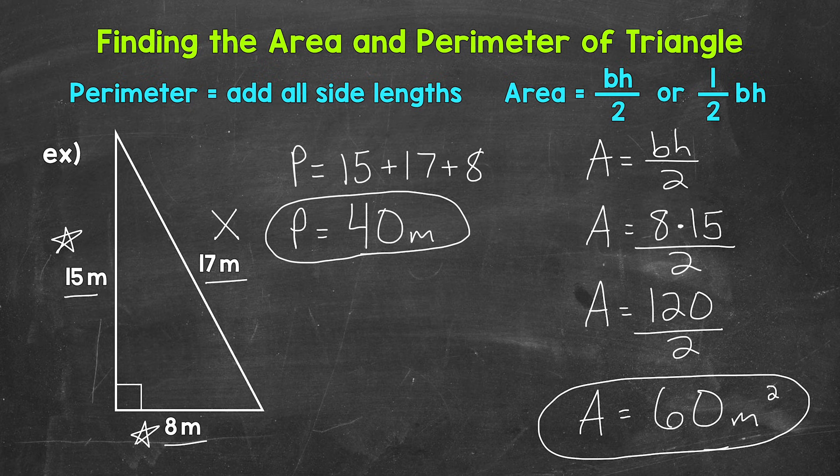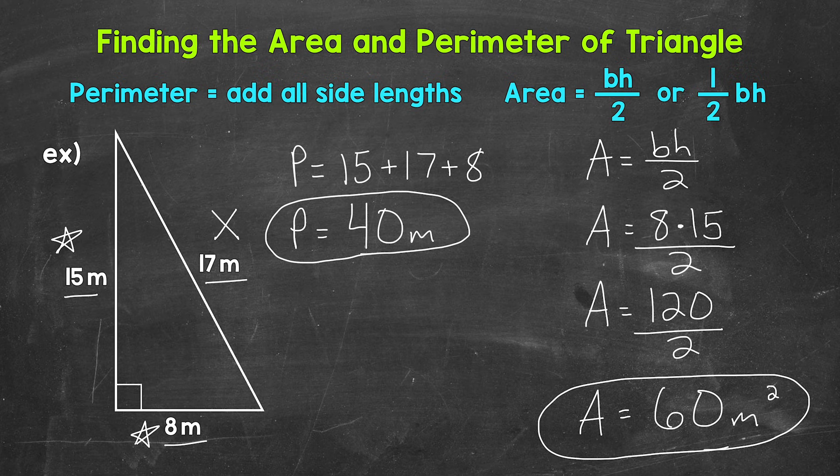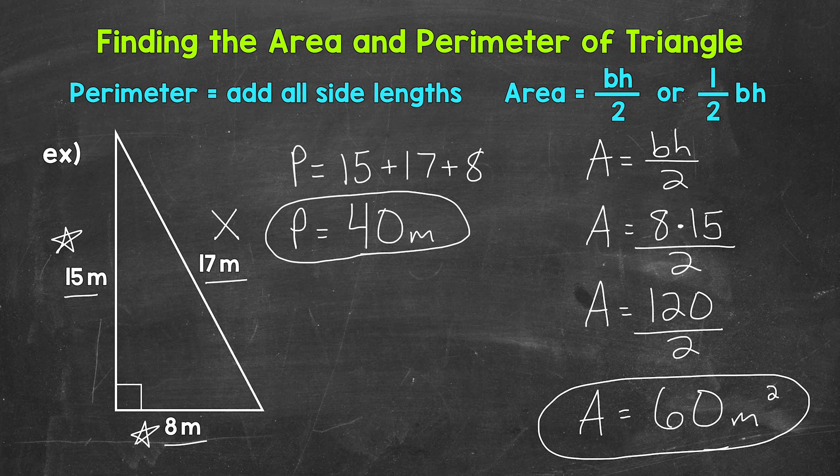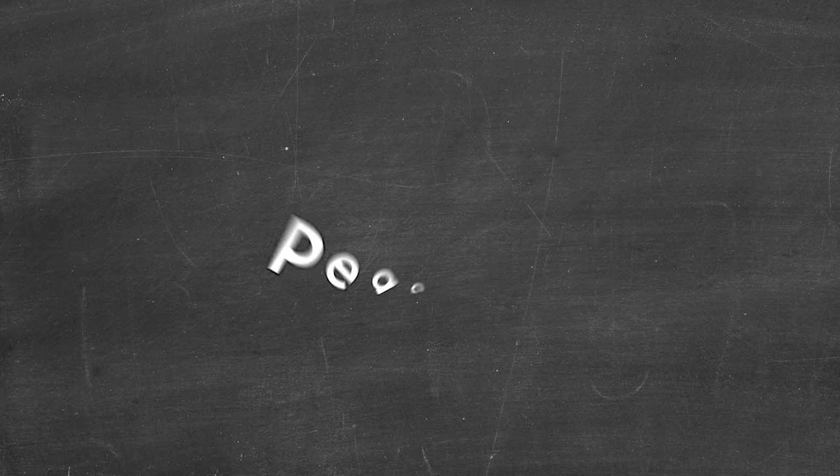So there you have it. There's how to find the area and perimeter of a triangle. And specifically, we worked with a right triangle. Just remember, for the perimeter, we add all of the side lengths. And then for the area of a triangle, we can either use base times height divided by 2, or one half times base times height. I hope that helped. Thanks so much for watching. Until next time, peace.